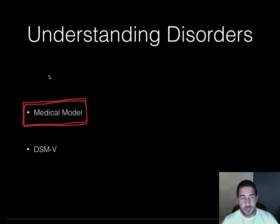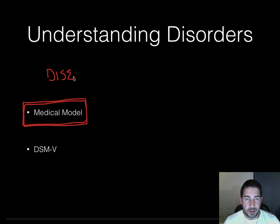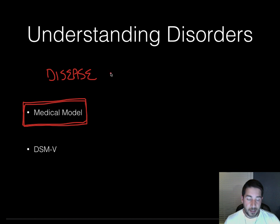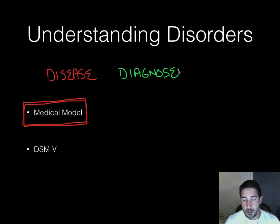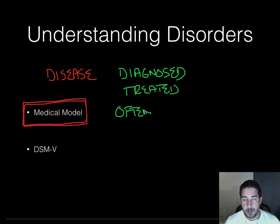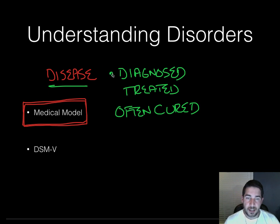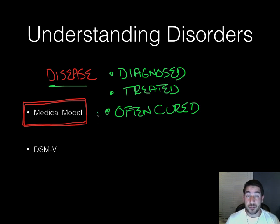The medical model says that a psychological disorder is a disease. We classify it as a disease that could have physical causes, and importantly, it can be diagnosed, treated, and often cured. So we look at psychological disorders this way: they're a disease, we can diagnose them, treat them, and oftentimes cure them — just as we approach any other disease, whether it's something wrong with your heart or another part of your body.